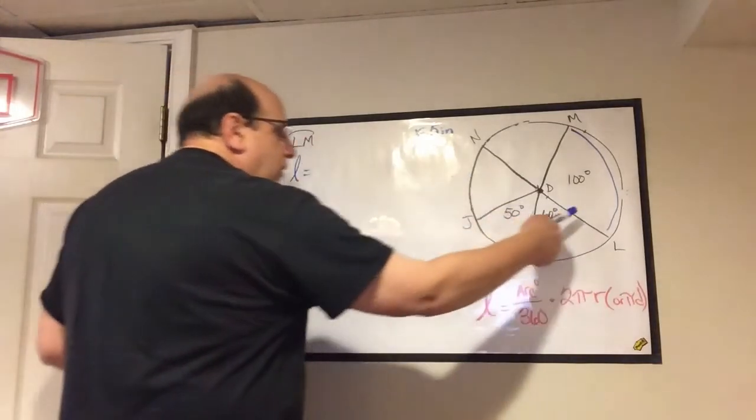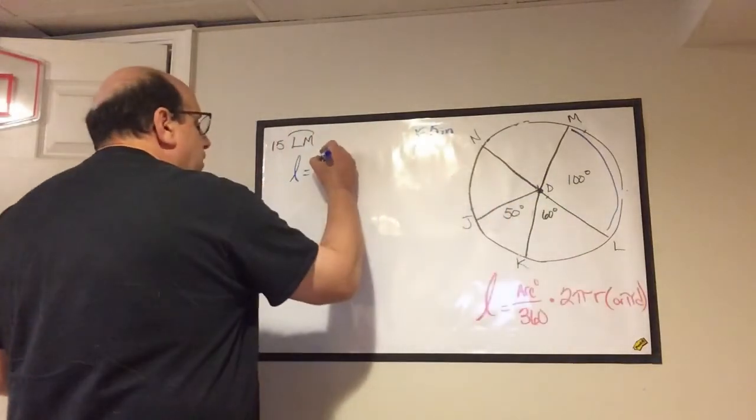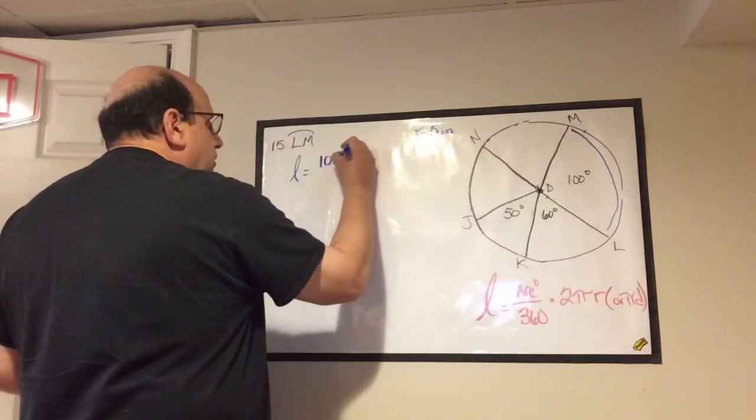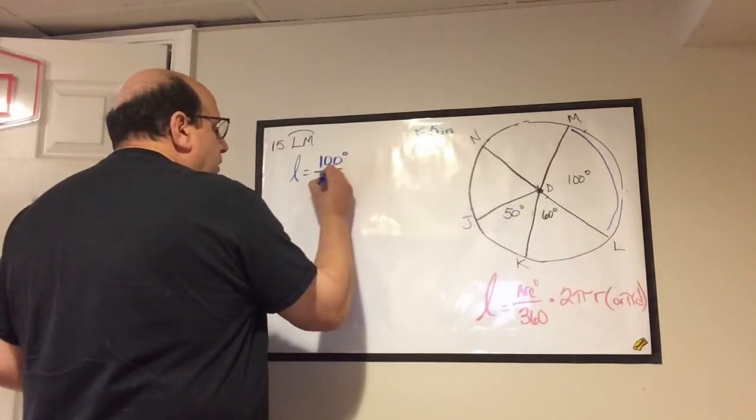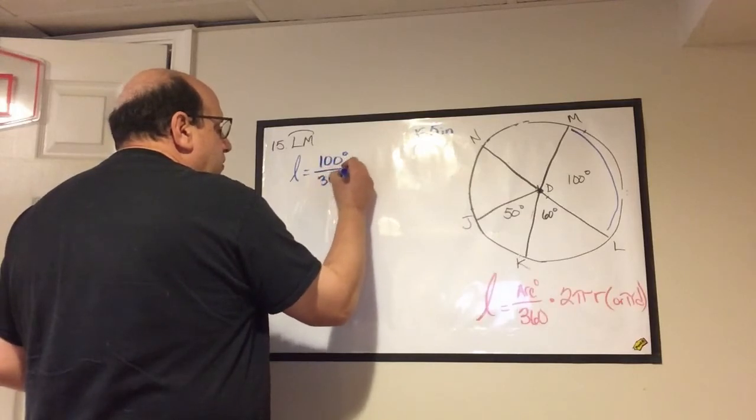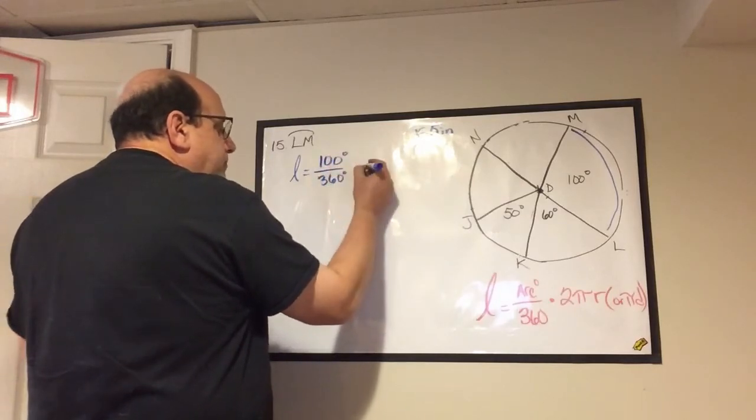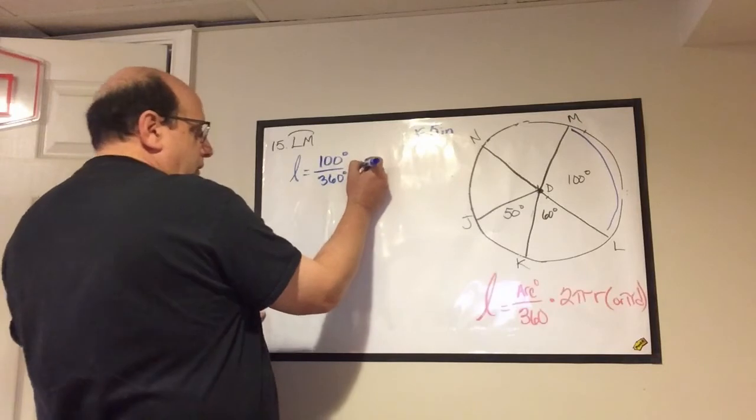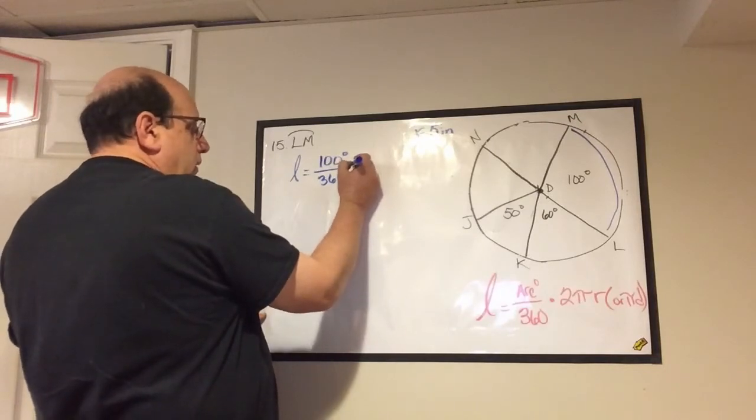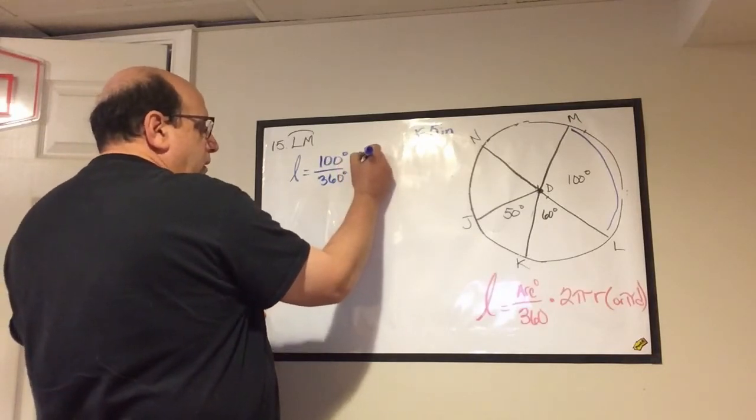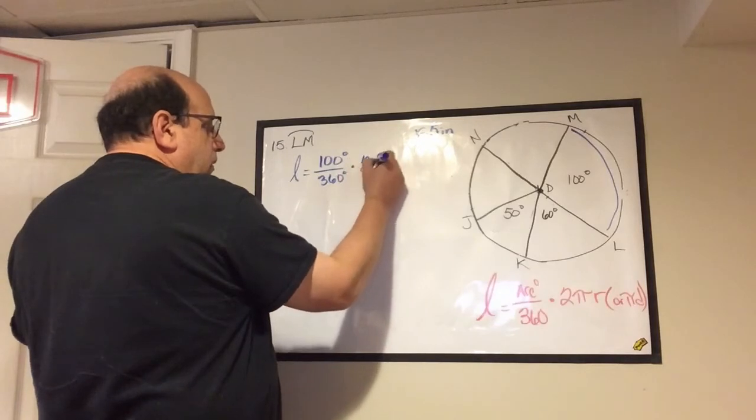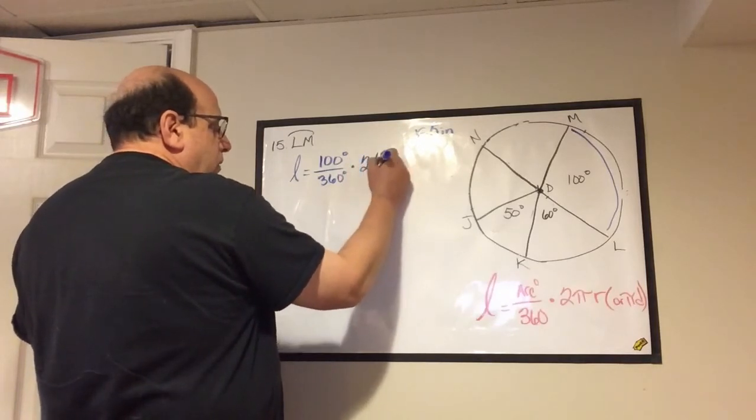I'm going to set up my length formula here. The length is equal to 100 degrees out of 360 degrees, and then multiply by two times pi times five.